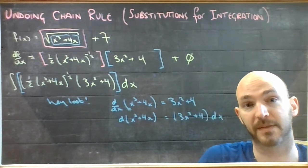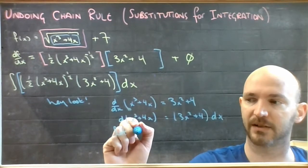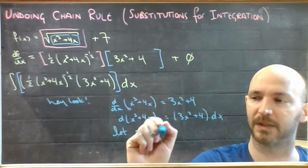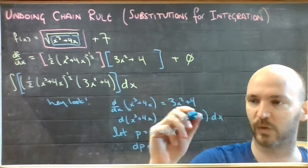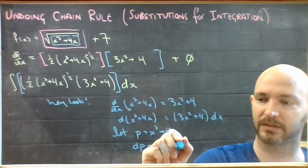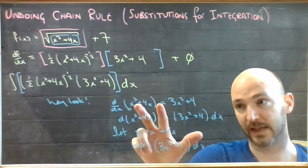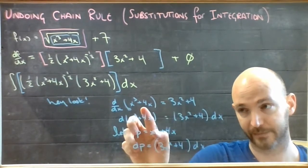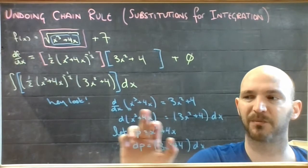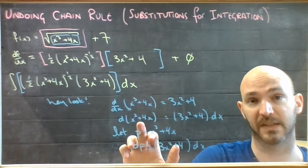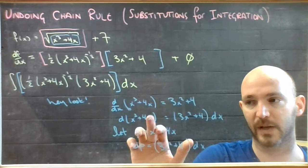I'm going to make a little substitution. Let p equal x cubed plus 4x. Therefore dp equals 3x squared plus 4 dx. I looked at these two pieces and noticed that the derivative of this chunk is this — I moved the dx to the other side. Instead of writing x cubed plus 4x all the time, I'm just going to write the letter p, so d of x cubed plus 4x becomes dp.